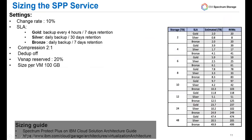Spectrum Protect Plus will automatically be set up with a change rate of 10%, service level agreements of gold, silver, and bronze, compression set at 2-to-1, dedupe off, and a vSnap reserve of 20%. There is a chart taken from the sizing guide that provides an example of how we will assist you in sizing your vSnap when setting it up.